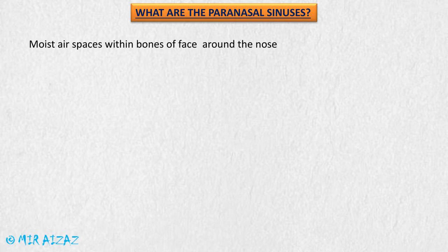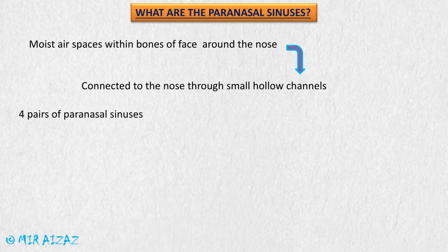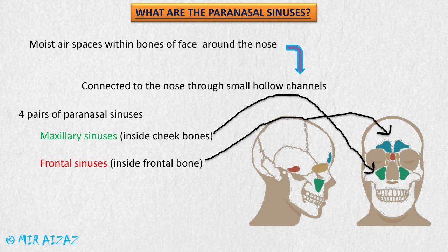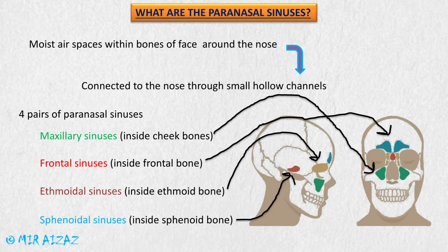The paranasal sinuses are spaces inside the bones around our nose, filled with air, and connected to the nose through small hollow channels through which they drain into the nasal cavity. Humans have four pairs of paranasal sinuses: the maxillary sinuses inside the cheekbones, the frontal sinuses inside the frontal bones, the ethmoidal sinuses inside the ethmoid bone, and the sphenoidal sinuses inside the sphenoid bone.